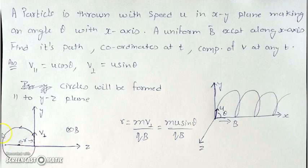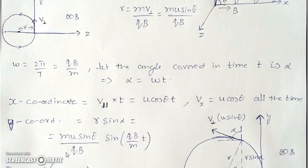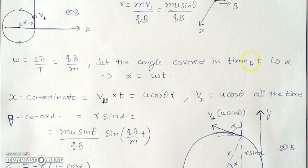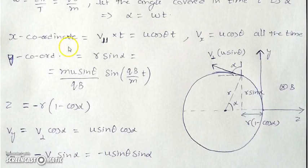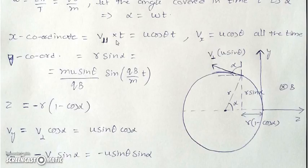After getting the center and radius, draw the circle. Angular velocity can be calculated using the time period. In time t, the angle covered is α = ωt. The x-coordinates are simplest to calculate: the particle moves with constant velocity v_parallel along x with no acceleration, since there is no magnetic force along the field direction. So x = u cosθ · t, and the x-component of velocity remains constant throughout.